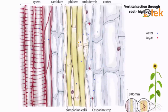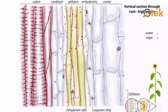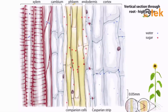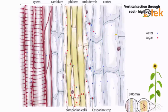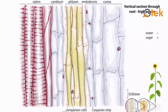This is the casparian strip, where the water molecules spread over the root. Sugar — the red arrow shows sugar being transferred into the companion cell. This is how water and sugar travel through the root.